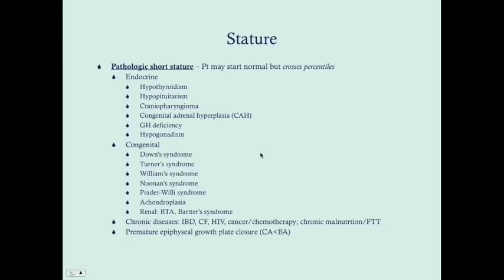Pathologic short stature can be recognized either when a patient is shorter than they should be and has one of these causes, or when a patient starts normal and begins to cross percentiles on the growth chart. Some endocrine causes include hypothyroidism, hypopituitarism, craniopharyngioma, congenital adrenal hyperplasia, growth hormone deficiency, and hypogonadism.